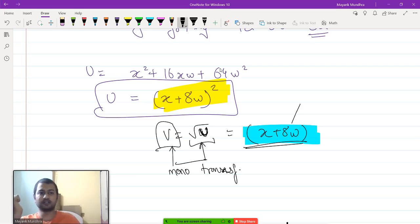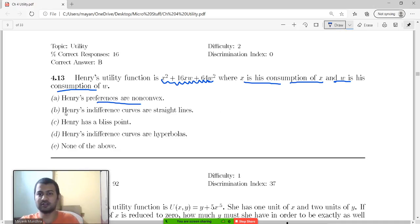So, I know that its ICs are going to be straight lines, which implies that its ICs will also be straight lines. So, ICs for both utility functions are going to be straight lines. So, indifference curves are straight lines. So, that is the answer B.